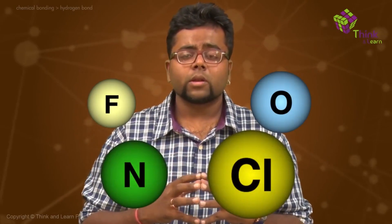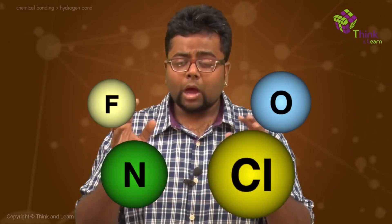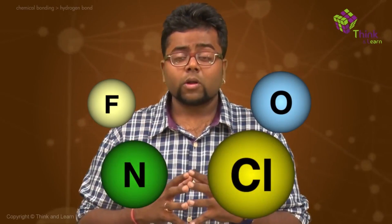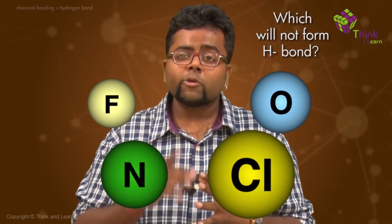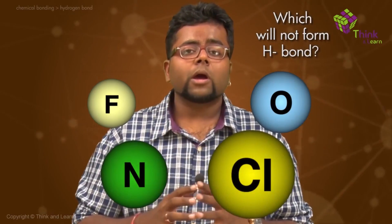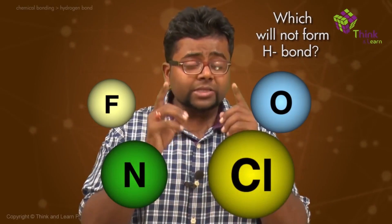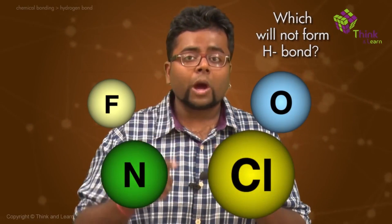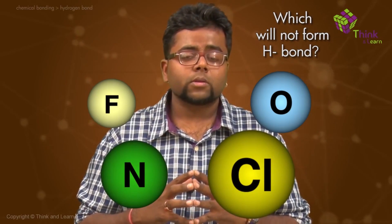Let me ask you a question. If I have four elements or four atoms in front of me — fluorine, oxygen, nitrogen, and chlorine — out of the four, which one do you think will not form a hydrogen bond? And please think: why will it not form a bond?